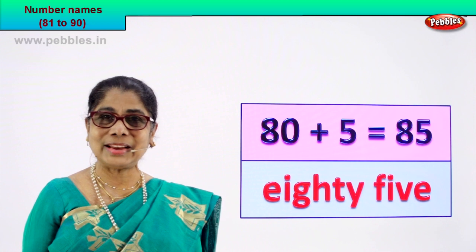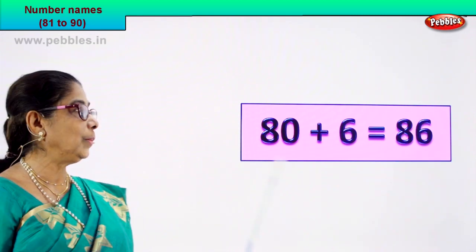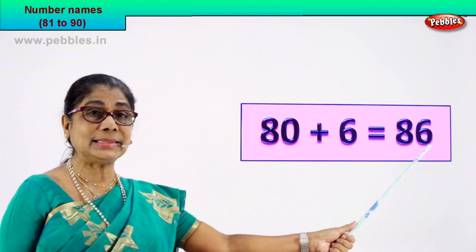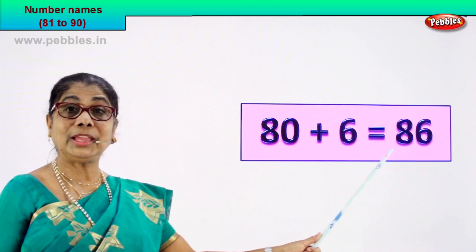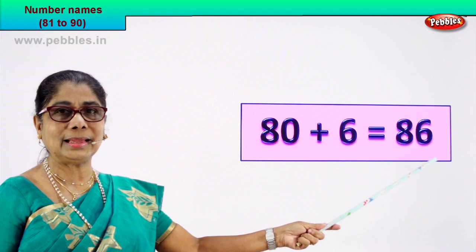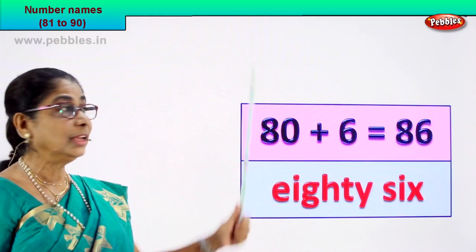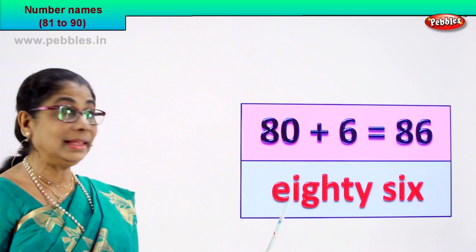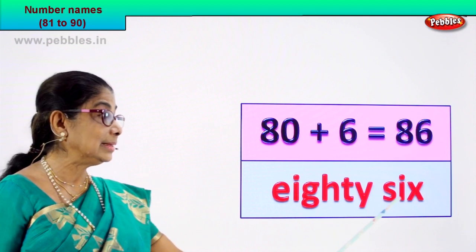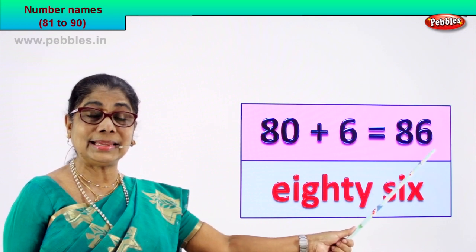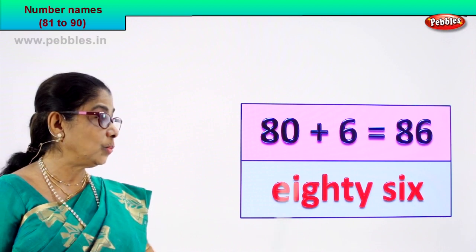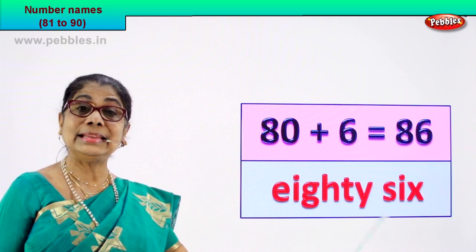Shall we go to the next numeral? 80 plus 6 is equal to 86. The numeral 86 — you know the spelling of 80 and 6. Eighty — E-I-G-H-T-Y — and six — S-I-X. The numeral 86, its name is written as eighty-six.